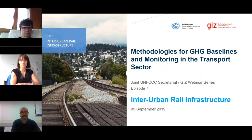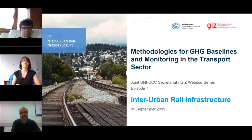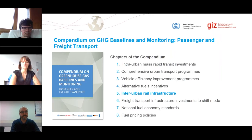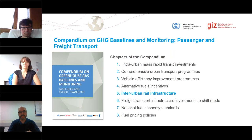Welcome again, everyone, to Episode 7 of Methodologies for Greenhouse Gas Baselines and Monitoring in the Transport Sector, today on Inter-urban Rail Infrastructure Expansion. Before we begin, I'd like to give you a little bit of background on the passenger and freight transport volume of the Compendium on Greenhouse Gas Baselines and Monitoring, which is the publication we did together with the UNFCCC Secretariat. The Compendium has several volumes, and the one on transport covers eight chapters, each looking at a different mitigation action type — from mass rapid transit investments to vehicle efficiency improvements to fuel pricing — also including inter-urban rail infrastructure, which is what we'll look at in more detail today.